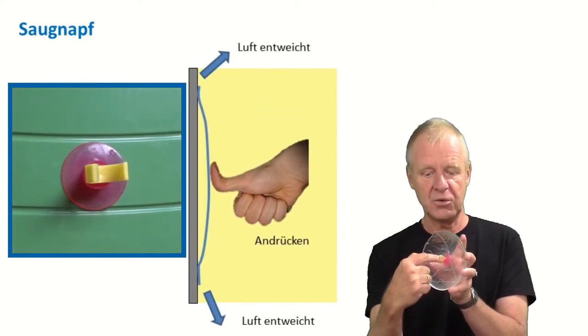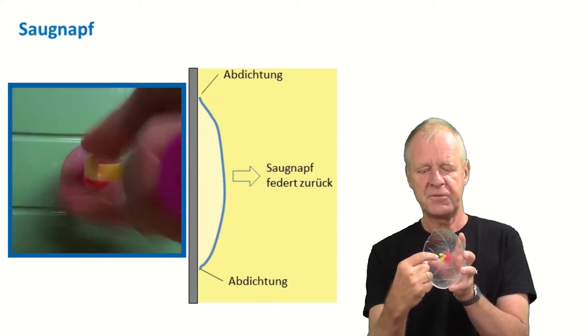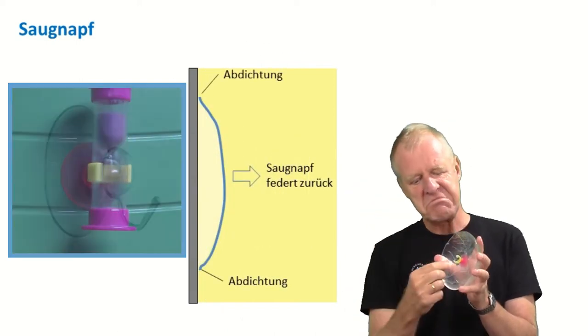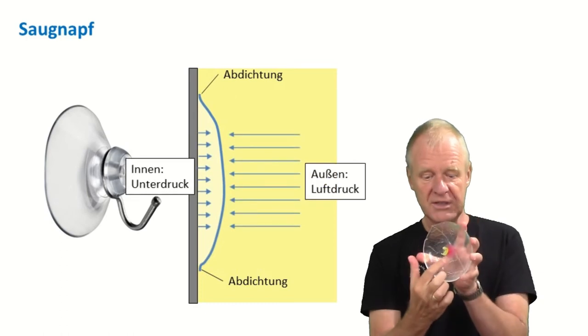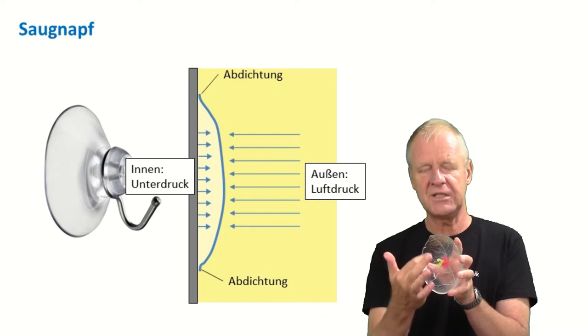When I let go of the cup, the cup will spring back up, but due to the tight sealing between the smooth wall and the cup, no air can flow in, and this results in a vacuum under the suction cup. In other words, the air pressure on the outside of the cup is greater than the air pressure on the inside of the cup.